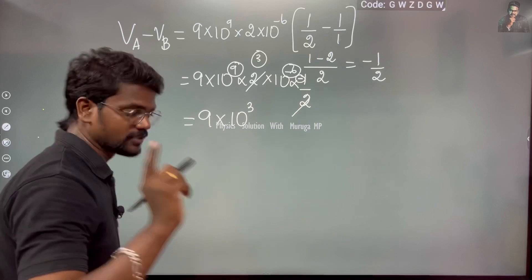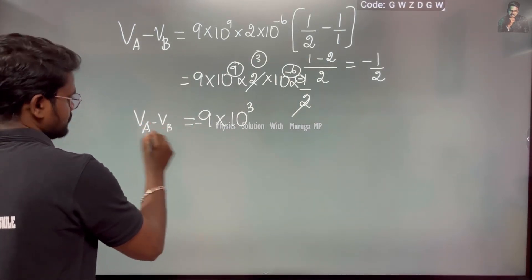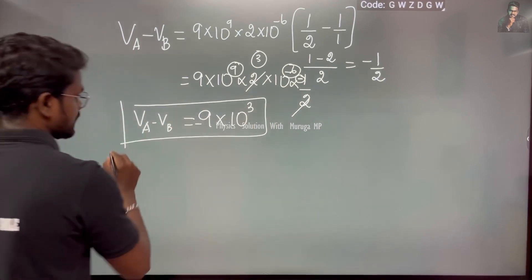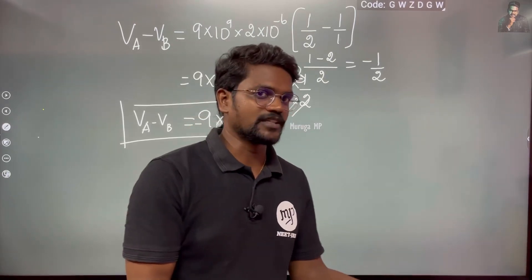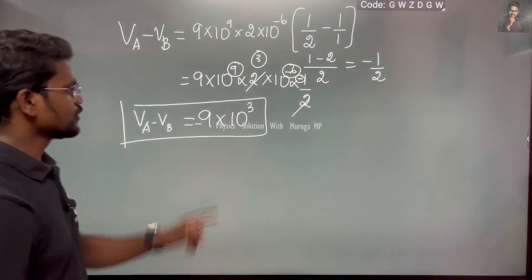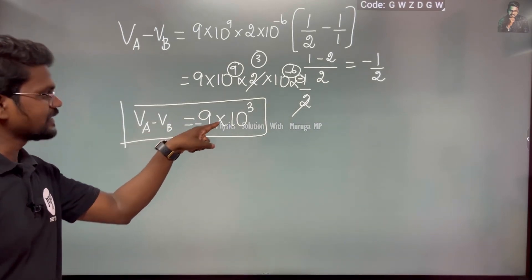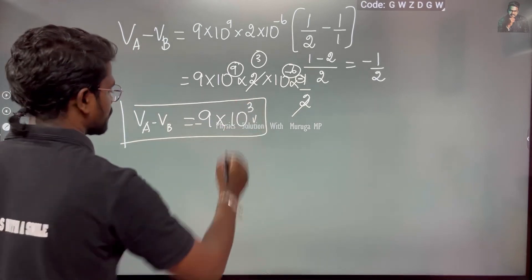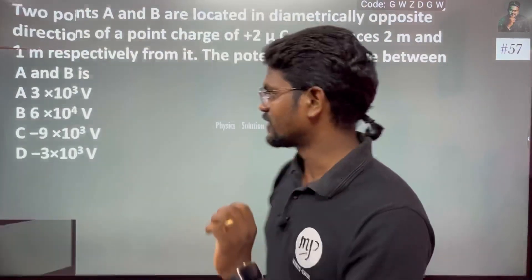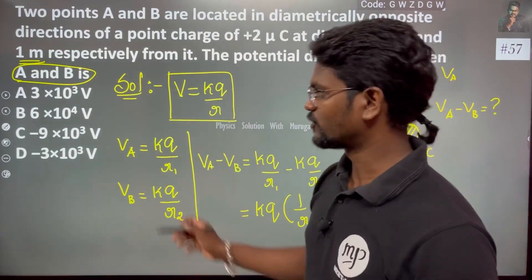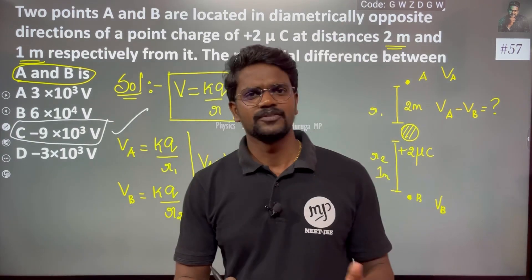So VA minus VB equals minus 9×10³ volts. Point B is at a shorter distance, so it has a higher potential — that is why the result is negative. The answer is minus 9×10³ V, which corresponds to option C. Good day!